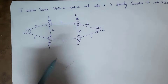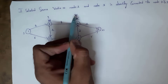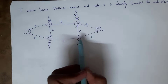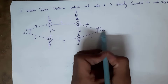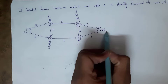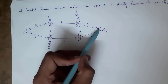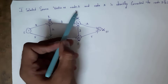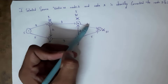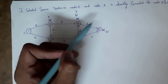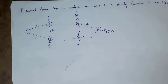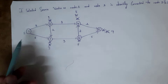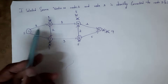8 is smaller than 10, so I am replacing this 10 with 8. Similarly, distance from node 5 to node 6 is 6 plus 5, that is 11, so I am replacing this infinity with 11. But from node 4 to node 6, the distance is 8 plus 1, that is 9. Since 9 is smaller than 11, I am replacing this 11 with 9. Now we have visited all the nodes.